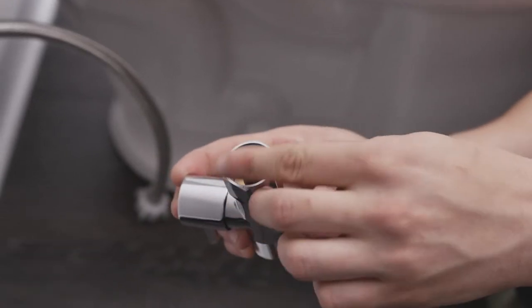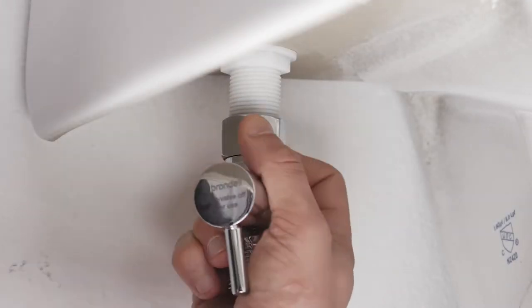Insert the provided black rubber washer into the T-valve. Connect the T-valve to the fill valve under the toilet tank.